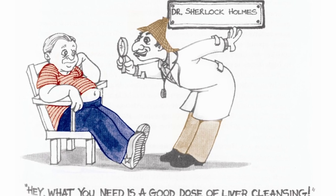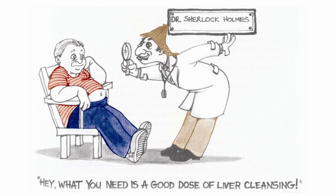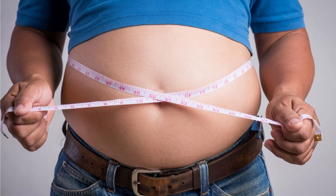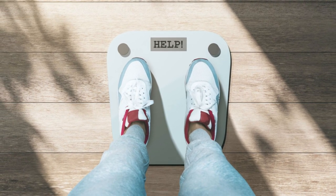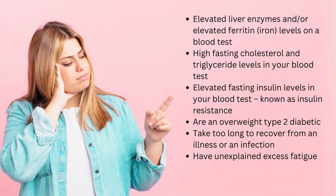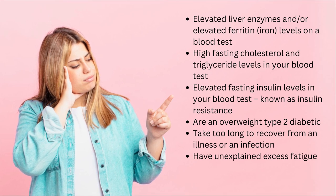How can you suspect that you could have a fatty liver? Signs could be that you're overweight, especially in the abdominal area — we call this central obesity. You may struggle to lose weight from your abdomen, have elevated liver enzymes or elevated ferritin on a blood test, high fasting cholesterol and triglyceride levels, elevated fasting insulin levels — known as insulin resistance — or be an overweight type 2 diabetic with trouble controlling your diabetes. You may also take an abnormally long time to recover from illness, and feel very tired.